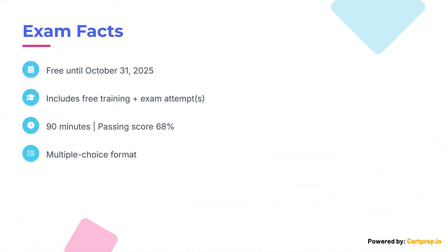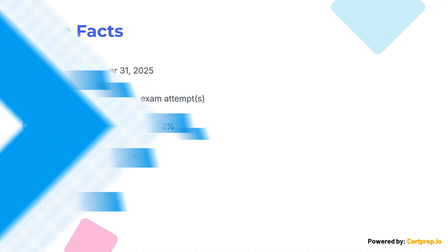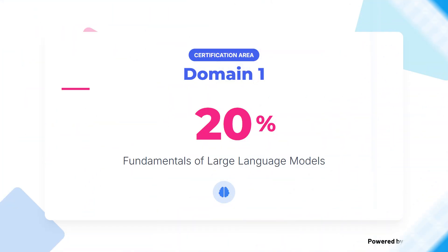Here are the key facts. The certification is free until October 31, 2025, under the Race to Certification offer. You get free digital training plus free exam attempt or attempts. The exam is multiple choice with a 90-minute duration. The passing score is 68%.